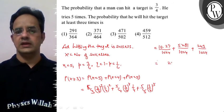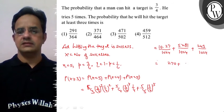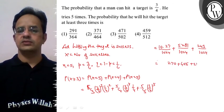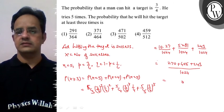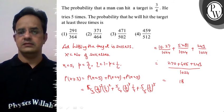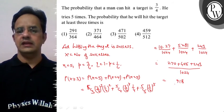So it is 270 + 405 + 243 divided by 1024, which equals 918/1024.